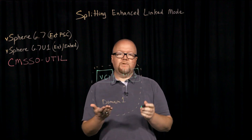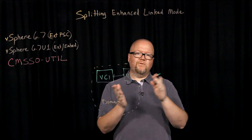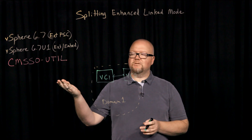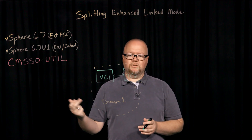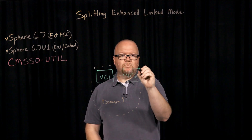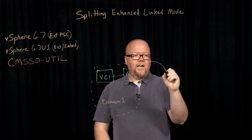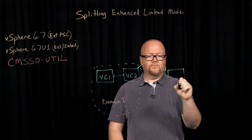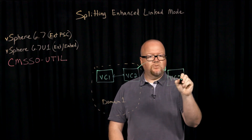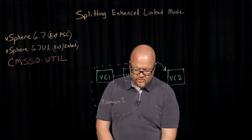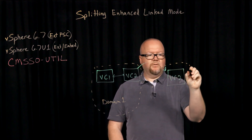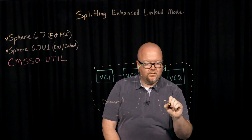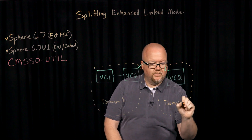Now, we want to take vCenter 2 and move it to its own SSO domain and break that enhanced link mode. We can do that with our CMSSO utility and a domain repoint. What we'll do is domain repoint vCenter 2 out to another domain that we're creating at the same time as that repointing function. So vC2 is now going to be essentially in its own new SSO domain — we can call this one domain 2.